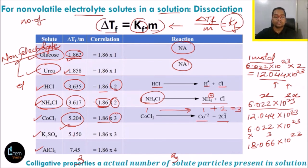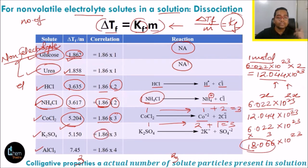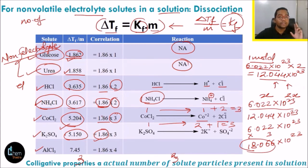For K2SO4, the dissociation gives: K2SO4 → 2K⁺ + SO4²⁻. That's 2 plus 1 = 3 particles. So again it is 3 times Avogadro's number. The theoretical value of 1.86 should become 3 times, so the experimental value is 5.150, which is almost 3 times. For AlCl3, the dissociation gives: AlCl3 → Al³⁺ + 3Cl⁻, giving 1 + 3 = 4 particles.